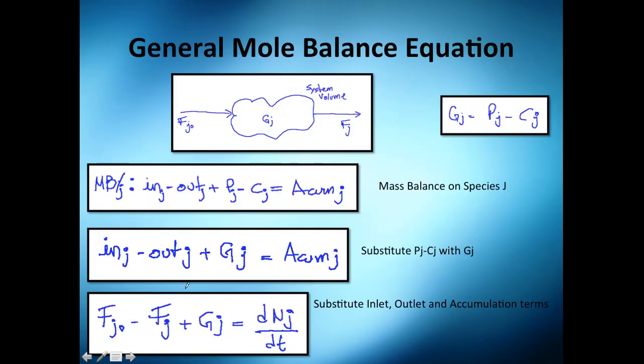So let's do a mass balance on species J. It will be the inlet minus the outlet plus the production minus the consumption, gives you the accumulation terms. That's from the mass balance equation. Hopefully you remember that. If you do not remember that, go to the mass balance course - I explain it there how do you get this equation. But essentially it is by common sense: the inlet minus the outlet plus the production minus the consumption should give you the accumulation of the system.